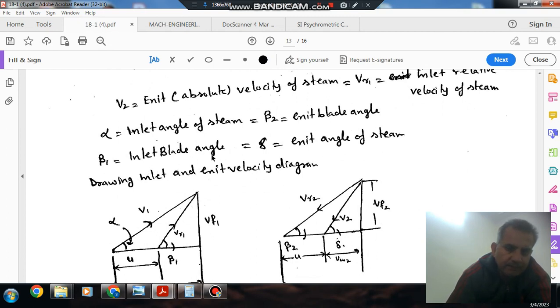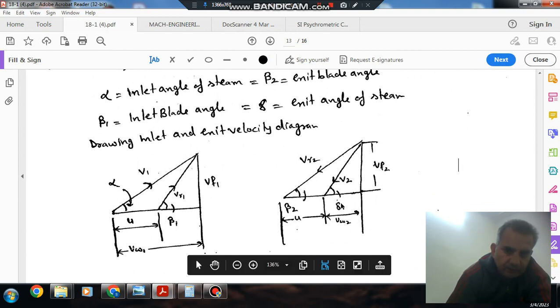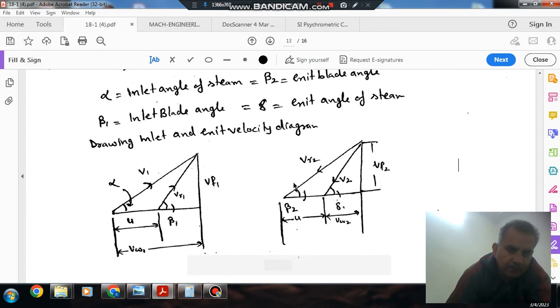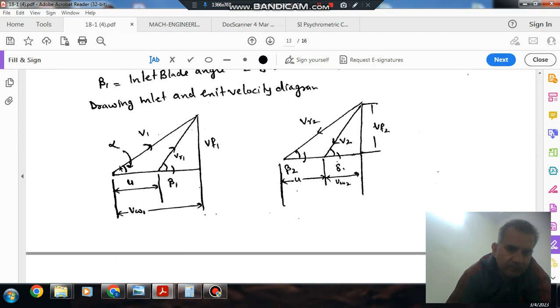Beta1 is the inlet blade angle. For 50% reaction, alpha equals beta2, which means V1 equals Vr2 and V2 equals Vr1. This is your inlet velocity diagram showing angle alpha, absolute velocity, relative velocity, blade velocity, whirl component velocity, and flow component velocity. This is the exit velocity diagram showing relative velocity at outlet, absolute velocity, whirl component, flow component, blade velocity, blade angle, and exit angle.